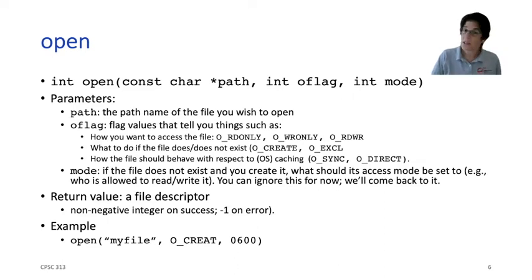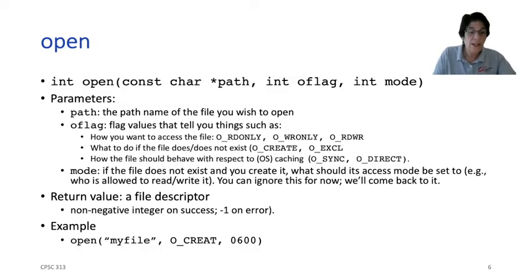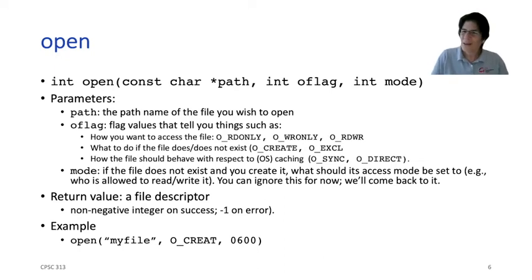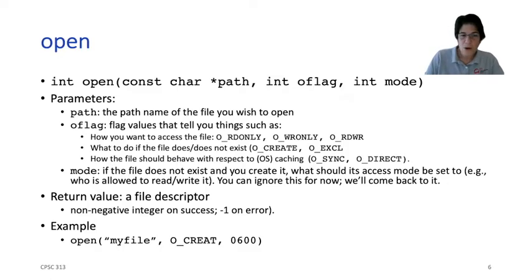Flags like O_CREAT let you create the file if it doesn't exist, and O_EXCL says you're only allowed to create it if no one else is doing that at the same time — this is how we resolve the race condition between checking if a file exists and trying to open and create it. We've learned about caching in hardware, and the file system is one of the biggest users of caching. But there are flags you can set at open time to disable caching. You might think about when you'd ever not want the file system to cache. Finally, the mode argument specifies who is allowed to access the file if you're creating it.